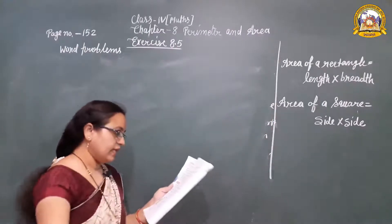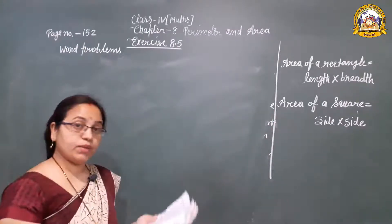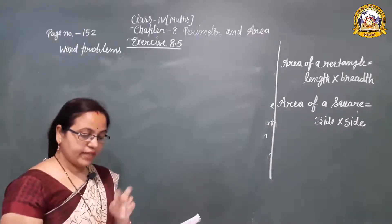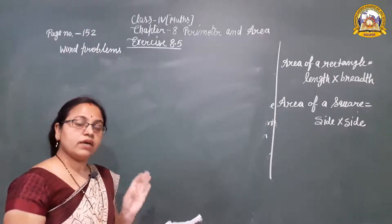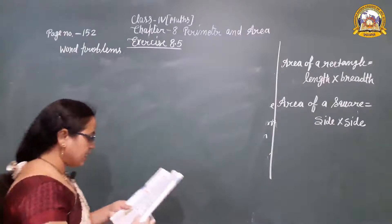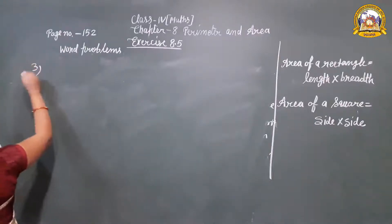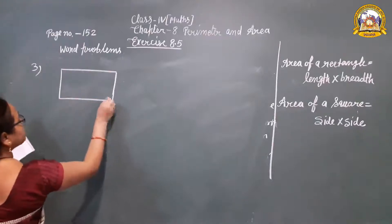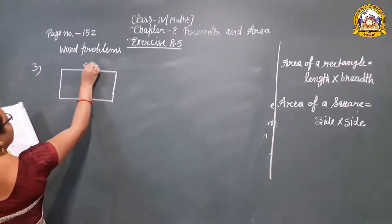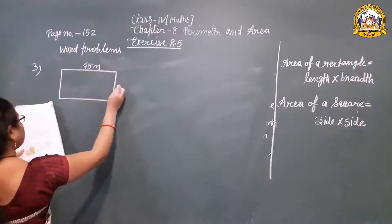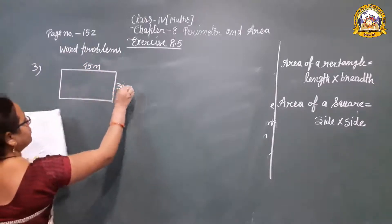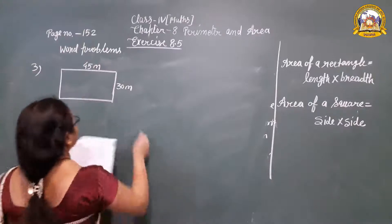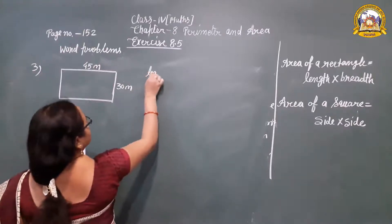Question number 3: the length of the swimming pool is given. A swimming pool — since both length and breadth are given, it is in rectangle shape. The length of the swimming pool is 45 meters and the breadth is 30 meters. We have to find its area.